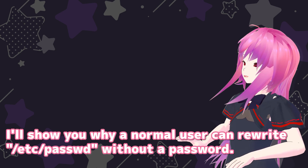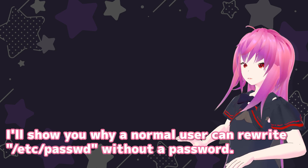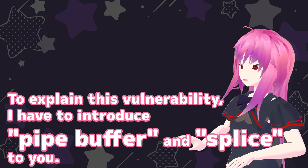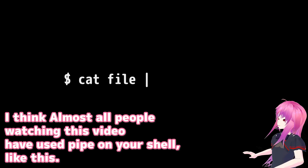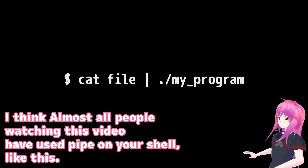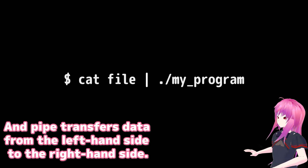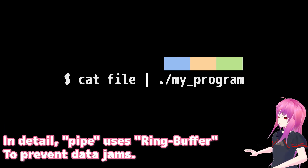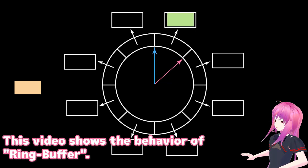Next, I'll show you why a normal user can write to /etc/password without a password. To explain this vulnerability, I have to introduce pipe buffer and splice to you. Almost all people watching this video have used pipe on your shell like this. The pipe transfers data from the left-hand side to the right-hand side. In detail, pipe uses a ring buffer to prevent data loss. This video shows the behavior of the ring buffer.